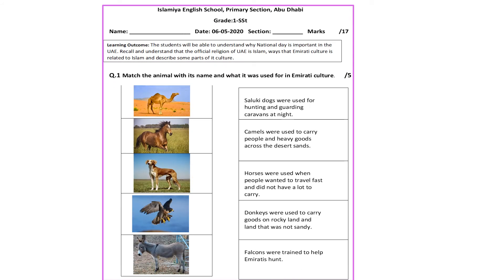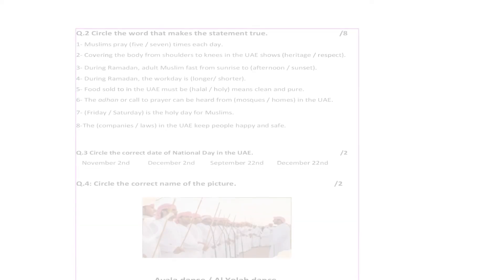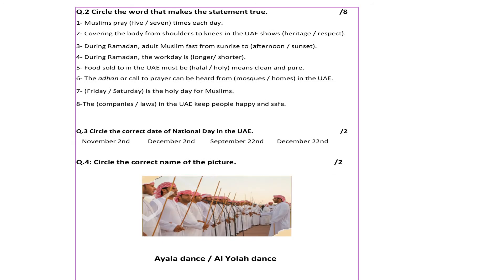Page number one, question number one: match the animal with its name and what it was used for in Emirati culture. For example, the first one is the camel — find the name of the camel and why it was used. Question number two: circle the word that makes the statement true.